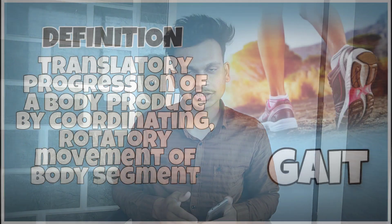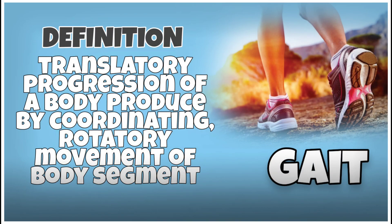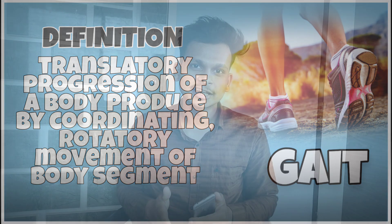Gait is nothing but a translatory progression of the human body which is produced by the coordinated and rotatory movements of the body segments. This means that our body segments show coordinated and rotatory movements which help to produce locomotion, that is the gait.